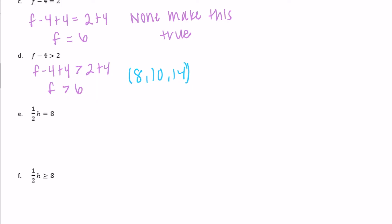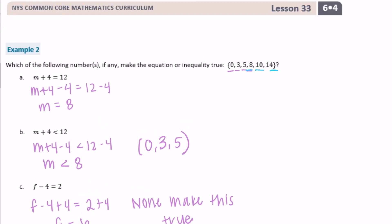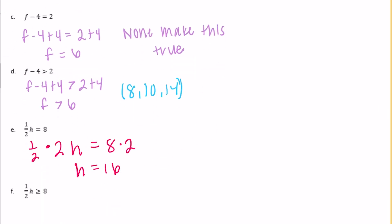Part e: one half h equals 8. To undo the one half, we multiply both sides by 2: h equals 8 times 2, so h equals 16. Since 16 is not in our choices, none of the options make this true.